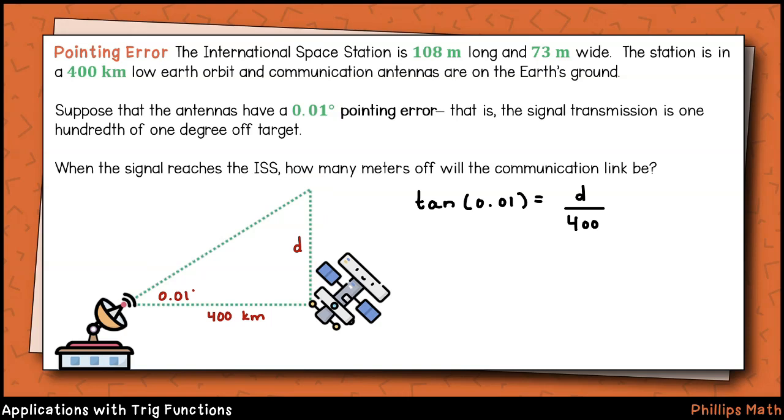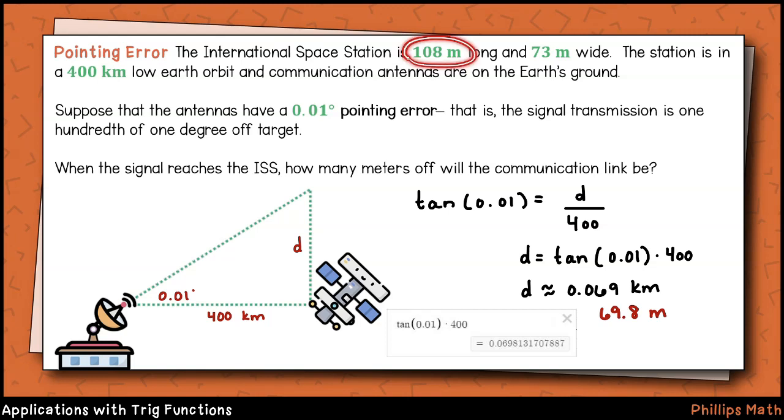We'll use tangent of 0.01 degrees equals the distance over 400. To solve for the distance, multiply both sides of the equation by 400. We get the distance equals tangent of 0.01 degrees times 400. That gives a distance of about 0.069 kilometers. That's the same as 69.8 meters. This may not seem like a big deal, but the station itself is said to be only 108 meters long and 73 meters wide. So the communication is going to miss by a width practically as wide as the station itself. That's quite a lot. This also demonstrates that rounding errors can really be critical, particularly in engineering applications.